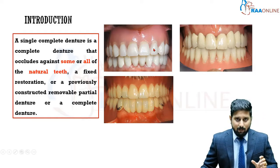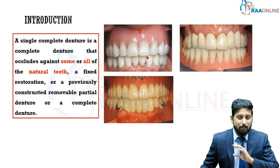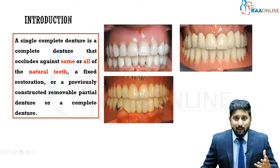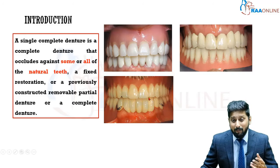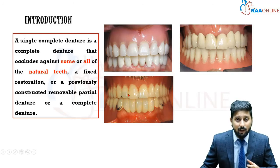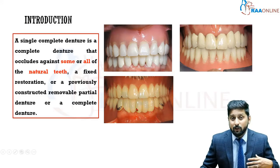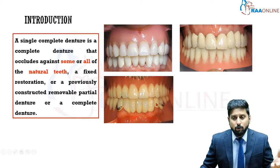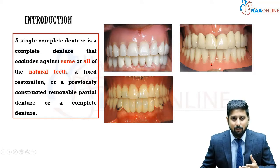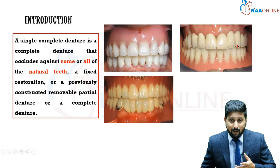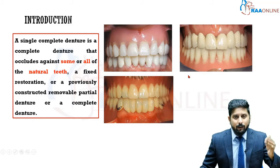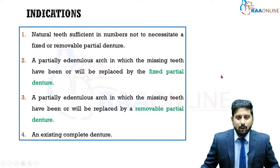Basically, it is a combination where one arch is completely edentulous and you fabricate a complete denture in that arch. The opposite arch — either mandible or maxilla — will either have a full complement of natural teeth, or a combination of natural teeth in certain areas with other areas partially edentulous, which may or may not have already been replaced by a fixed restoration or removable partial denture. The same applies for a mandibular single complete denture opposing either a completely or partially dentulous maxilla where edentulous areas have been or will be replaced by an RPD.